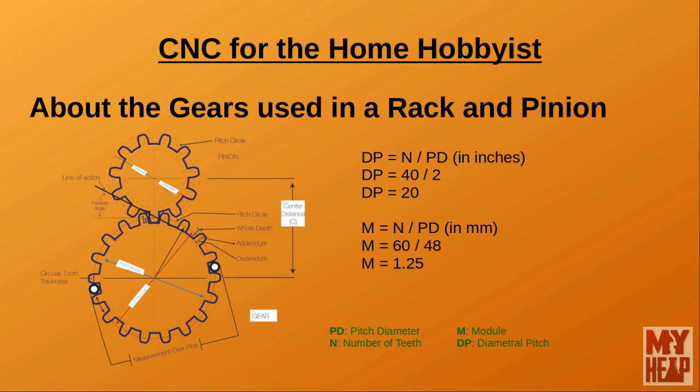To understand pitch diameter, look at the graphic on screen. Here you see two meshed gears making contact somewhere in the middle of the tooth. If you draw a circle using the center of the gear as the origin and this point of contact between the teeth as the radius, you draw what is known as the pitch circle. The pitch diameter is the diameter of that circle.